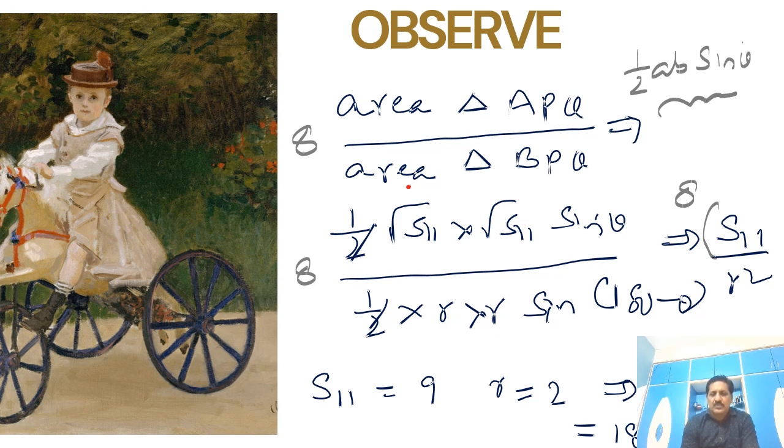So if you understand this one, within one or two minutes we can attempt this question. So the whole thing has now become 8 times of s11 by r². So here if you calculate s11, you are going to get 9. S11 is 9, radius already calculated r is 2 here.